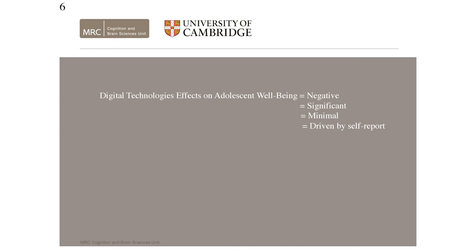So what this showed again is that yes, if we average across all different types of technologies and all different types of teenagers, the correlation again seems to be negative, it is significant, and it is still extremely small. And it seems to be mainly driven by self-reports. So if we use cumulative self-report measures where we ask teenagers to tell us how much they use technologies, those normally show much more negative correlations. And just today I read a preprint by people in Bath which actually showed that these self-report measures are really highly correlated with mental health and very low correlated with actual technology use — which is worthy of a whole separate talk.